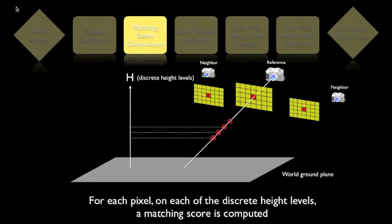In our experiments, we use three images as the input, with one reference image and two neighboring. The process repeats itself for all height levels on all pixels.